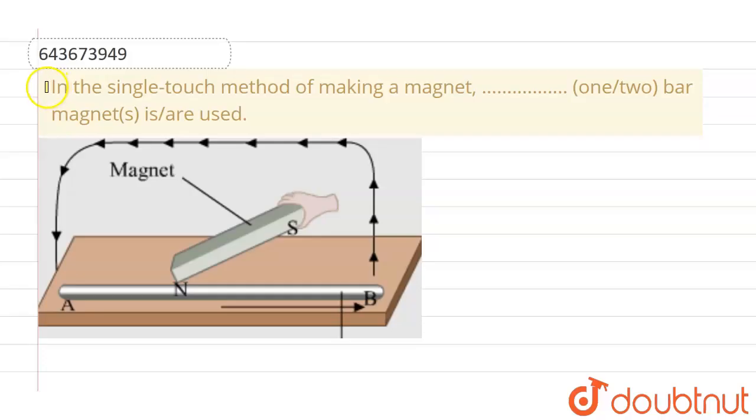Hello everyone. If we talk about this question, this given question is: In the single touch method of making a magnet, blank one or two bar magnets is or are used. So basically we have to fill in this particular blank space with either of the appropriate options. The given options are the first one is one and the second one is two.